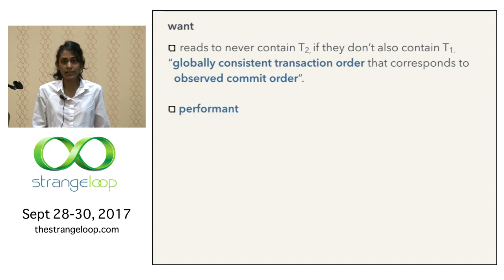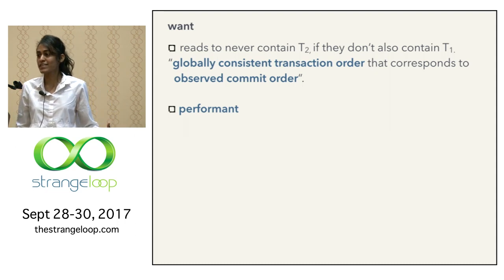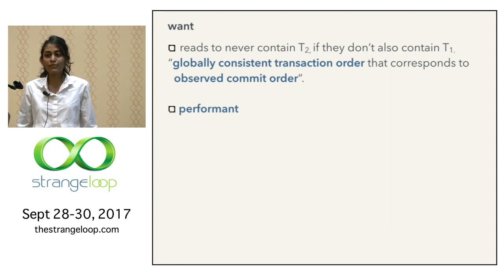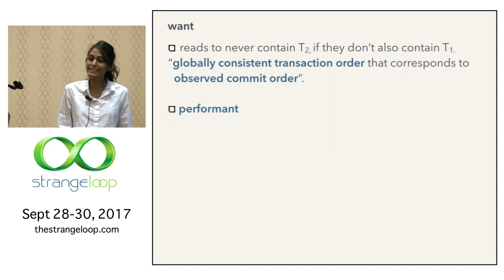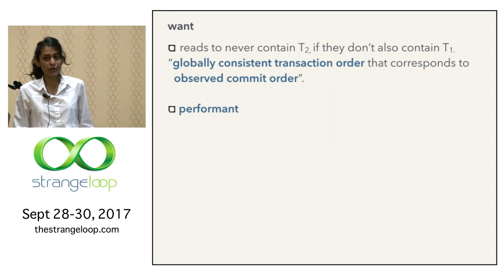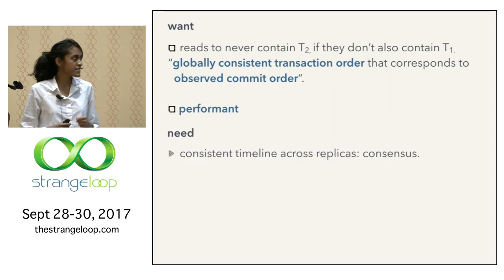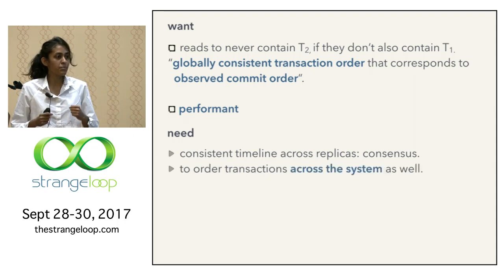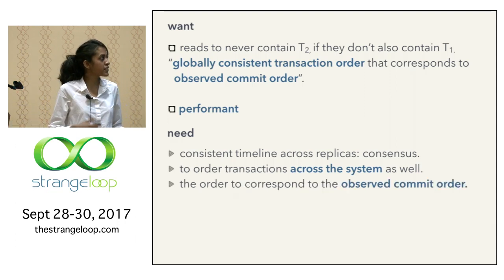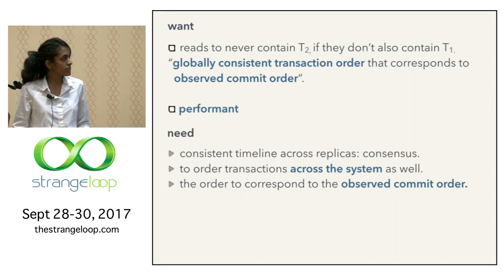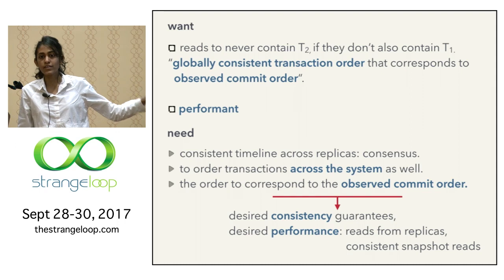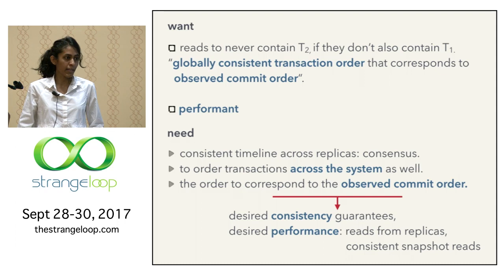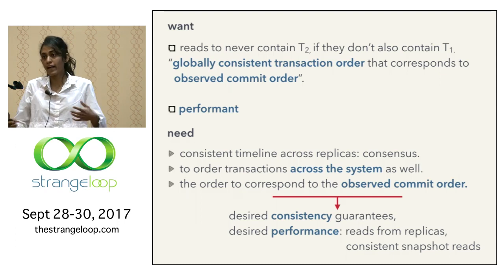Performance also matters — one way to provide external consistency would be to put a giant lock on the entire database, but that defeats the purpose of a distributed database. So what does this have to do with time? Translating those goals into requirements: we want a consistent timeline across replicas, we want to be able to order transactions across partitions, and we want this order to correspond to the observed commit order. Satisfying these three requirements gives us the desired consistency guarantees and also the desired performance — it allows things like reads from replicas and consistent snapshot reads.